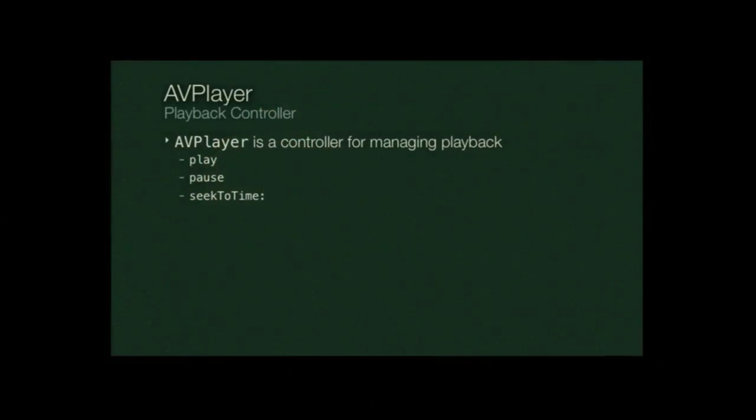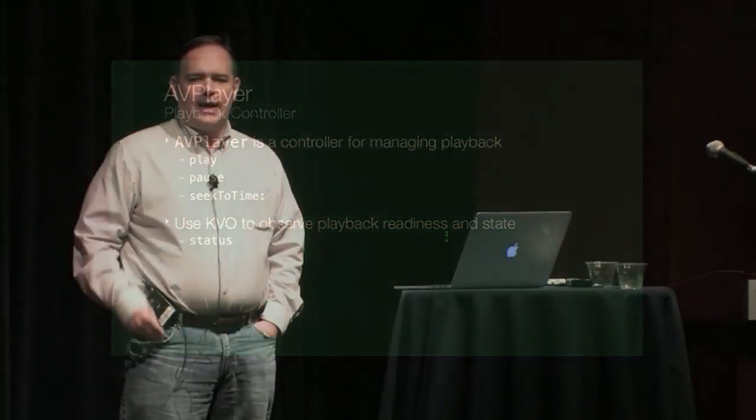Let's talk about media playback. In a playback scenario, the main class is AVPlayer, which provides a controller object for managing playback. It provides basic transport capabilities such as play, pause, and the ability to seek through your media. It also provides an important property called status. Whenever we feed media into an AVPlayer, it takes a few milliseconds to prime its pipeline, so we need to observe the status property using key-value observing and wait for it to tell us when it's ready to play. Then we can finally act on that medium.